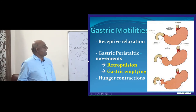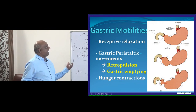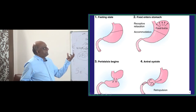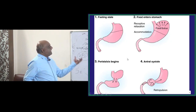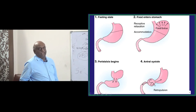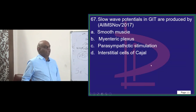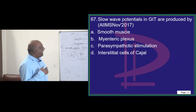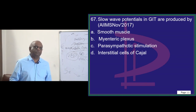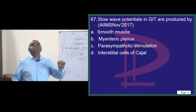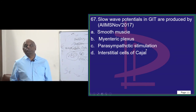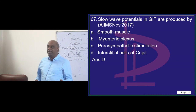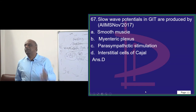In the fasting state, food enters the stomach, there is receptive relaxation to accommodate, then peristalsis begins and the antrum undergoes systole leading to retropulsion — that is what you have to ultimately remember. Repeatedly asked in NEET-PG and AIIMS exams, even recent AIIMS November 2017: slow wave potentials of the GIT — where are they produced? There is a pacemaker for peristalsis in the gut called the interstitial cells of Cajal.